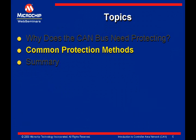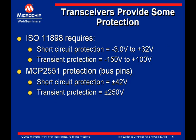The rest of the presentation will look at some of the common protection methods for the CAN bus. ISO 11898 is by far the most popular physical layer for CAN. The spec requires that the transceiver be able to withstand short circuit conditions on the bus of minus 3 volts to plus 32 volts, and transient energy surges of minus 150 volts to 100 volts. Microchip's MCP2551 exceeds the spec — the short circuit protection is plus or minus 42 volts and transient protection of plus or minus 250 volts. However, sometimes extra protection is still needed to further improve robustness of the CAN system.